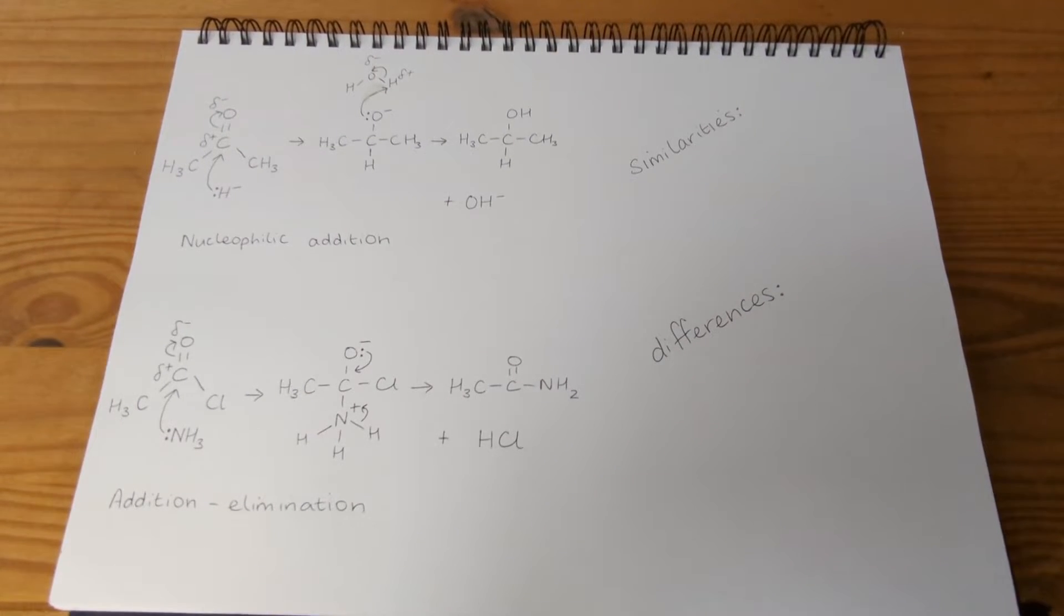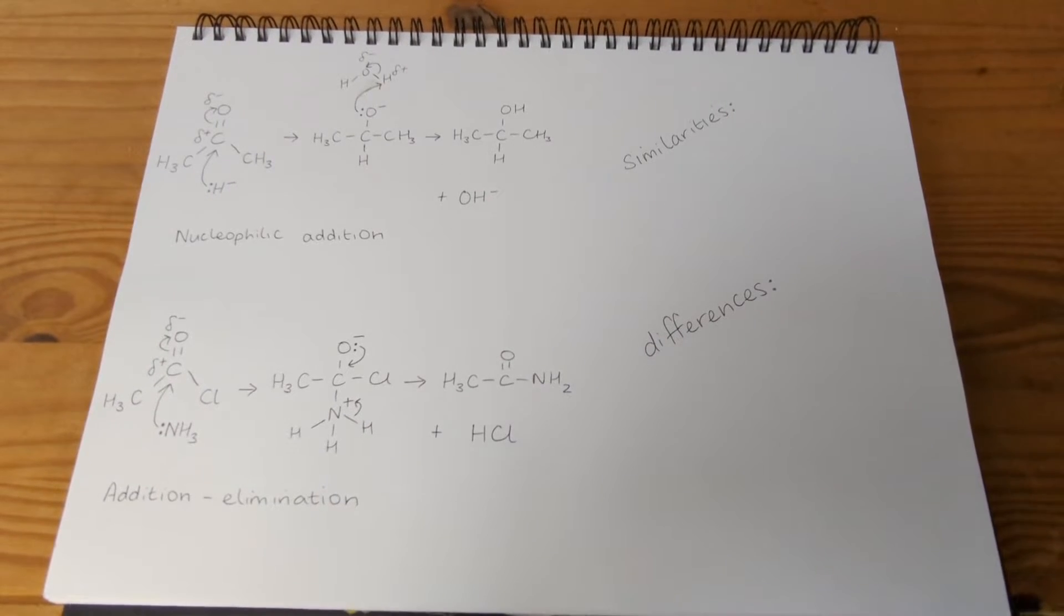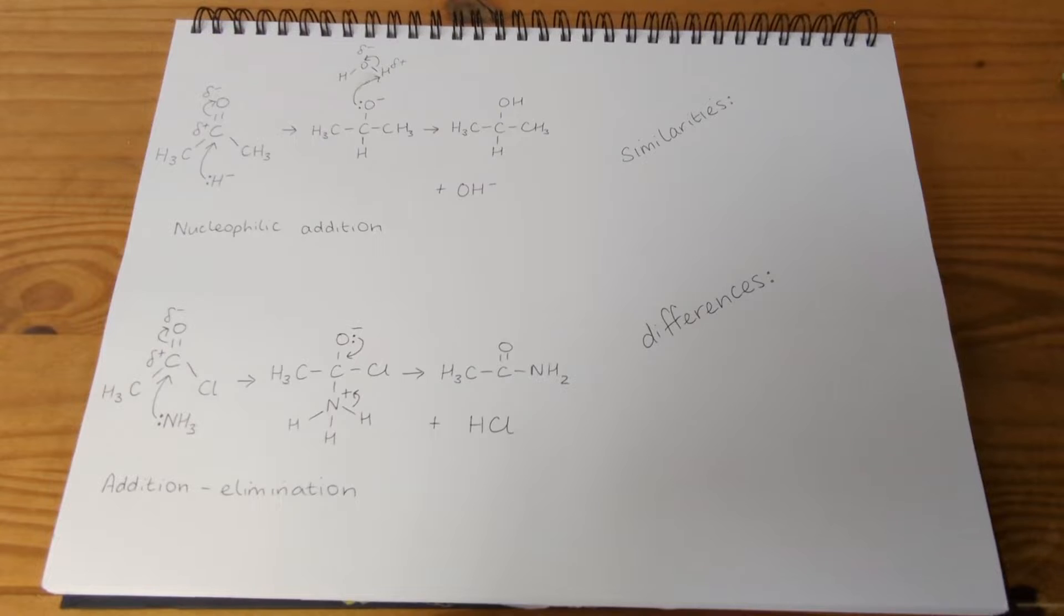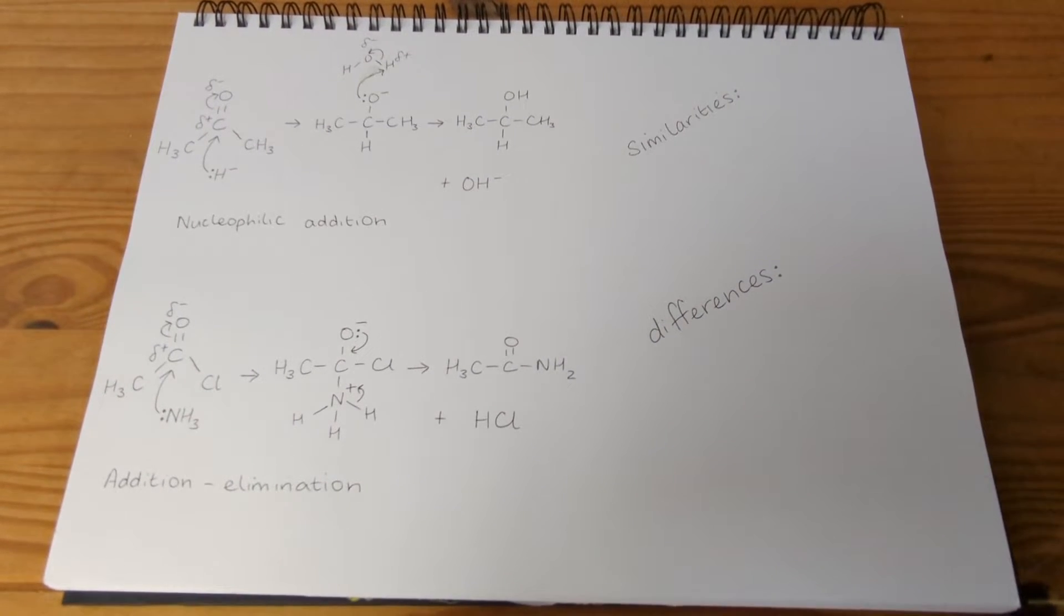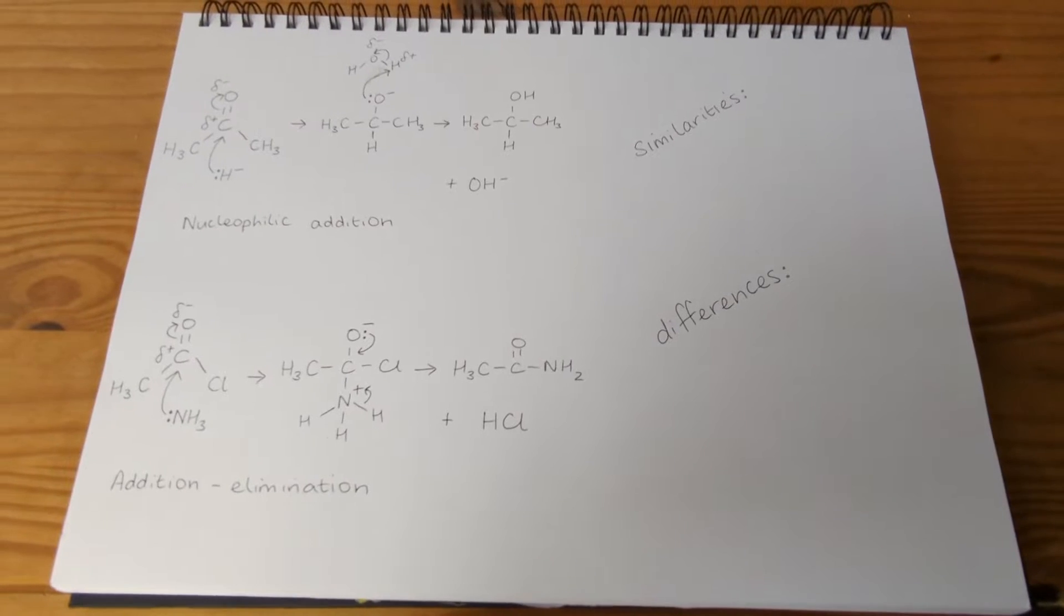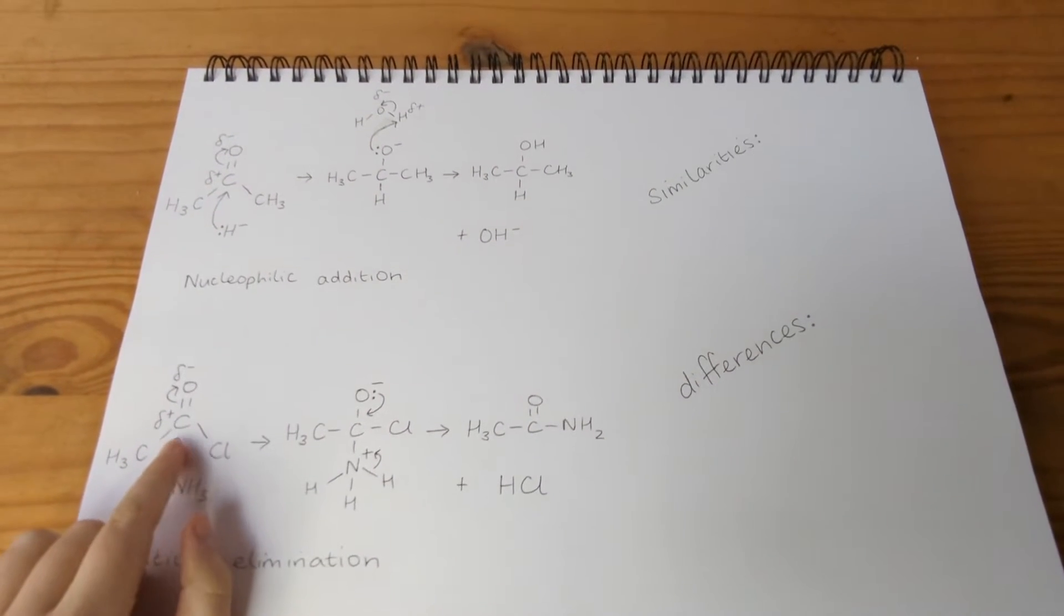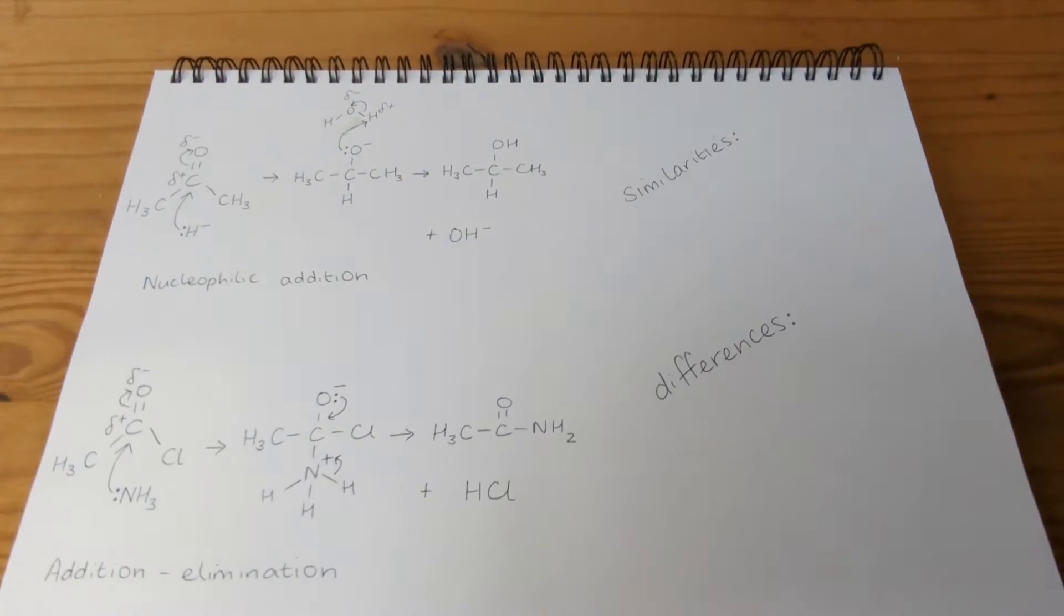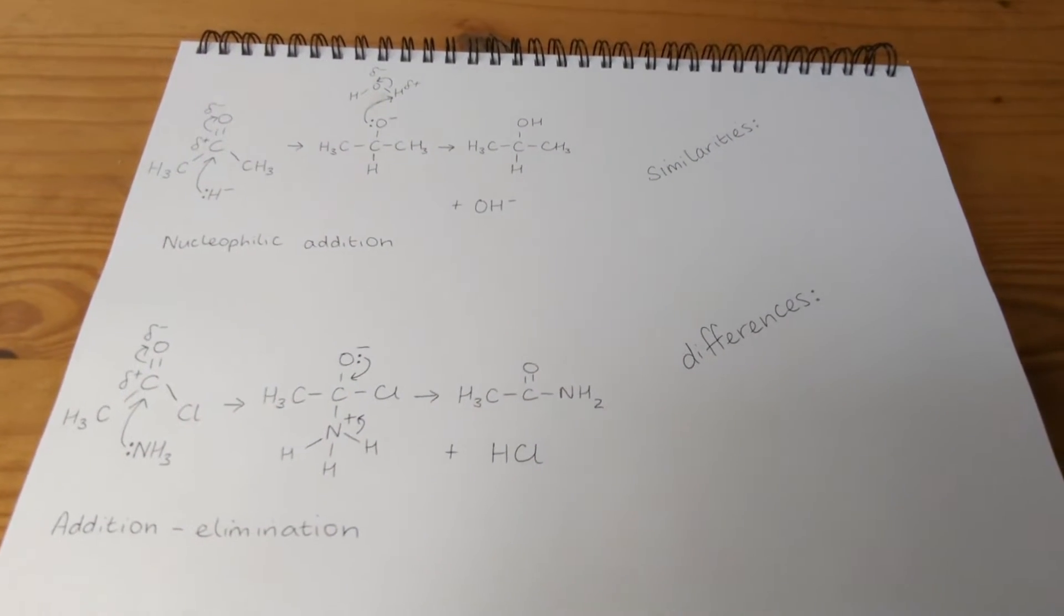Hi guys, in this video we're going to look at the similarities and differences between two carbonyl-containing mechanisms. A mechanism is something that shows the movement of electrons in a chemical reaction, and a carbonyl is this functional group here, this reactive carbon double bonded to oxygen group. So if we have a look at these two mechanisms, there's a few things we can look out for.